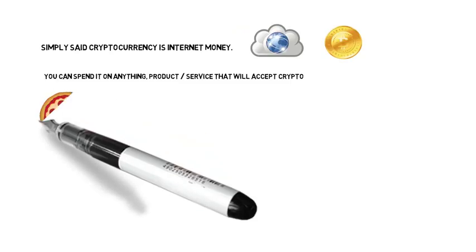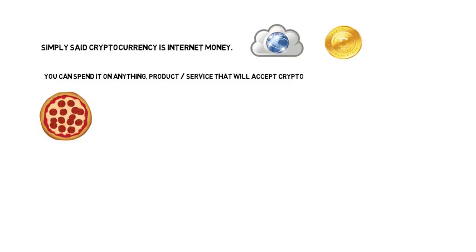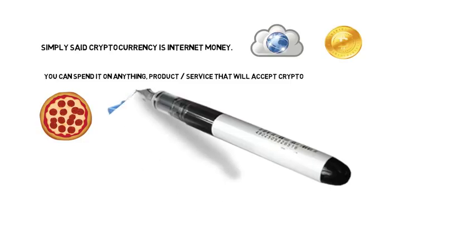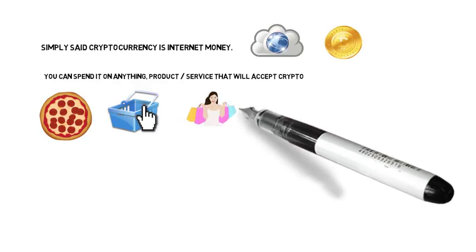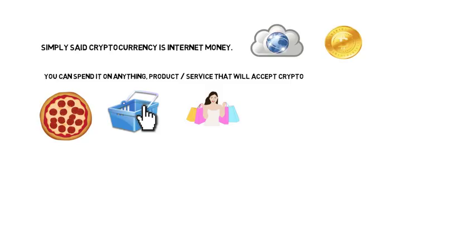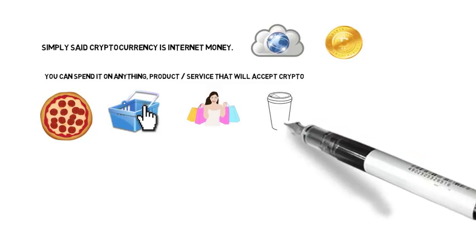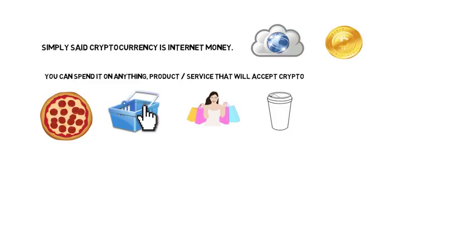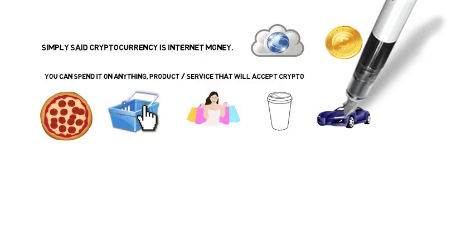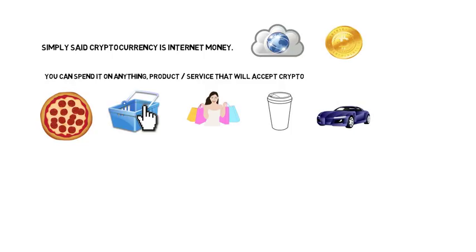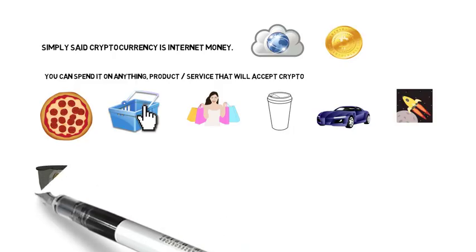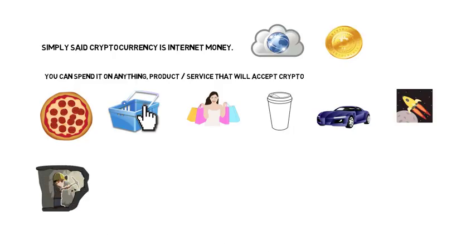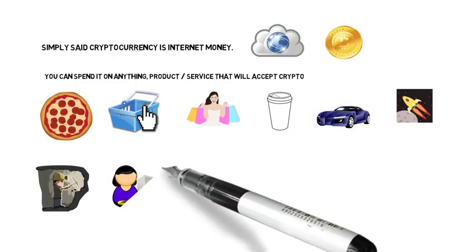You could buy a pizza — the first purchase of Bitcoin was actually a pizza for like 10,000 Bitcoin. If you had that much today, you'd have about $90 million. You can also buy e-commerce products online, do shopping at physical locations that will accept Bitcoin in many countries. You can buy your coffee using Bitcoin, buy a car, or even get a space tourism flight on Virgin Galactic — the Winklevoss twins were actually going to purchase a space tourism flight using Bitcoin.